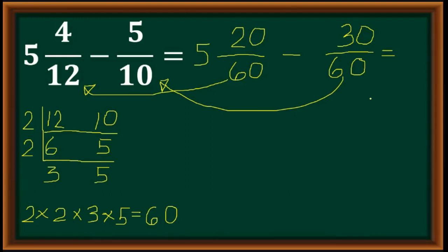There is a problem — we can't subtract 30 from 20. What we do is subtract 1 from the whole number, so it becomes 4. And then we're going to have 60 over 60.